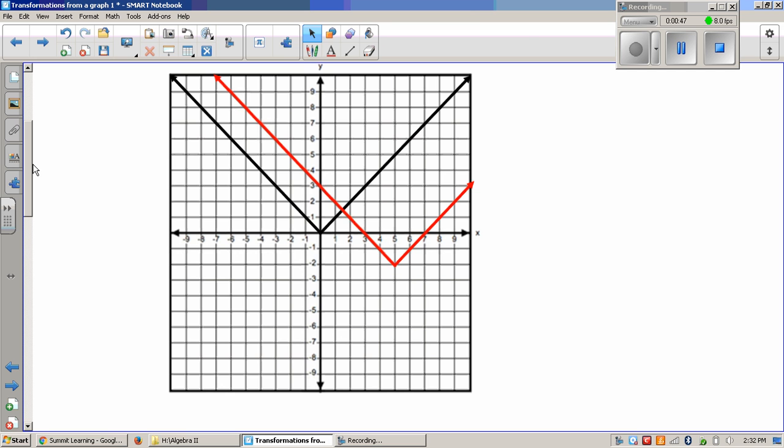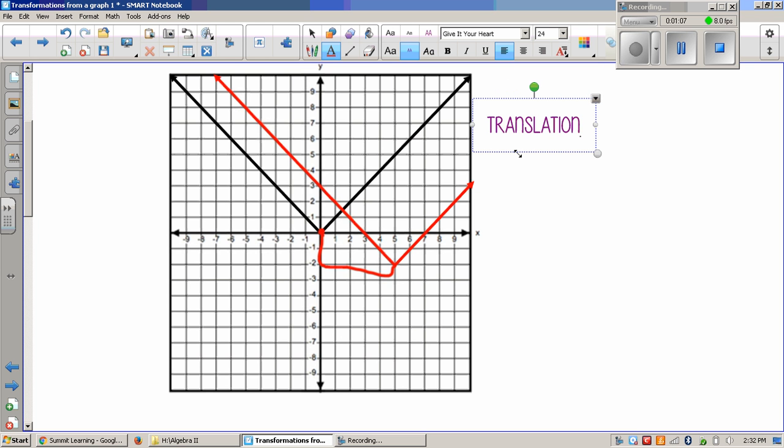It looks like all I'm doing is shifting or sliding the vertex here down and to the right. So if that's the only thing that I've done, then I would say the transformation here is a translation, and that's just a translation.